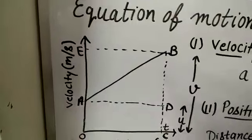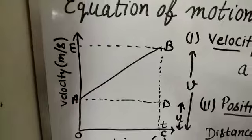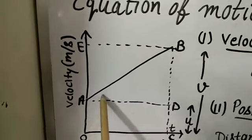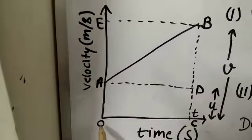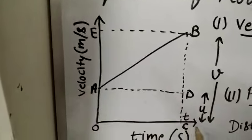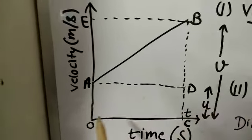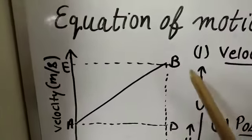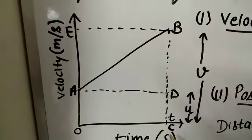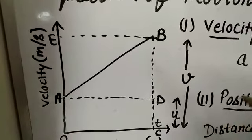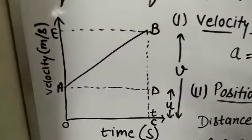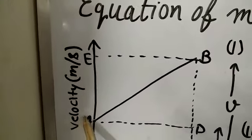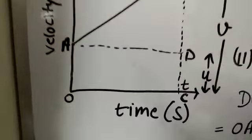On the y-axis, I have taken velocity, and on the x-axis, I have taken time. Suppose a body starts from point A and changes its velocity up to point B. From 0 to A, the velocity is the initial velocity, denoted by U. And from this point to B, the velocity is called the final velocity, denoted by V. The total time up to C is T. Velocity units are in meters per second and time units are in seconds.